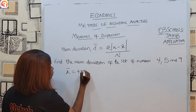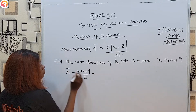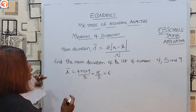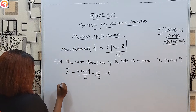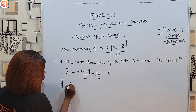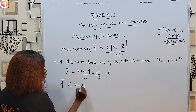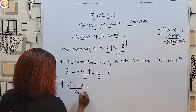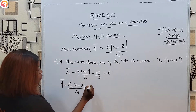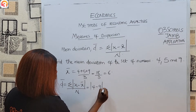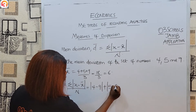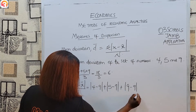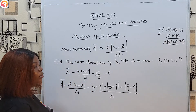So mean equals 4 plus 5 plus 9 over 3. That's 18 over 3, which equals 6. Now the mean deviation equals summation of |x minus x̄| over n, which gives us |4 minus 6| plus |5 minus 6| plus |9 minus 6|, all over 3.